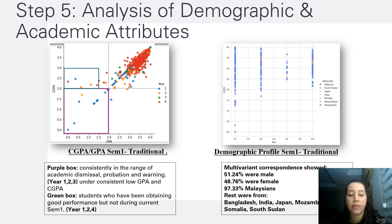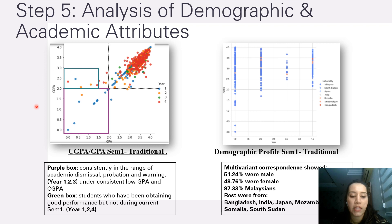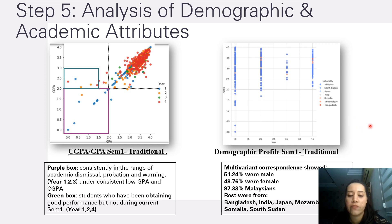Step five is the analysis of demographic and academic attributes for SEM 1, the traditional learning method. The purple box shows students consistently in the range of academic dismissal, probation, and warning — from year one, year two, and year three — under consistently low GPA and CGPA. The green box shows students who obtained good performance but not during semester one, from year one, year two, and year four. The demographic profile for SEM 1 showed 51.24% were male, 48.76% were female, 97.33% were Malaysians, and the rest were from Bangladesh, India, Japan, Mozambique, Somalia, and South Sudan.